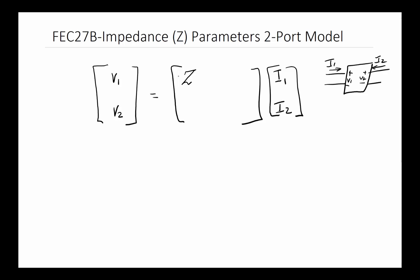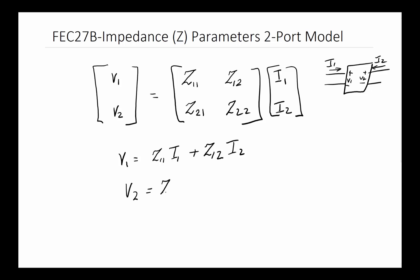The Z parameter matrix uses row-column notation: Z11 is row 1 column 1, Z12 is row 1 column 2, and so on. From basic matrix multiplication, the first row gives V1 = Z11·I1 + Z12·I2, and the second row gives V2 = Z21·I1 + Z22·I2. This is the Z parameter matrix.